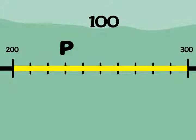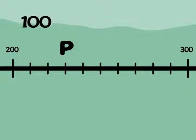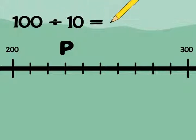Step two, now let's count the number of equal segments between the benchmarks. Hmm, 1, 2, 3, 4, 5, 6, 7, 8, 9, 10. I count 10. 100 divided by 10 is 10, so each segment is 10.